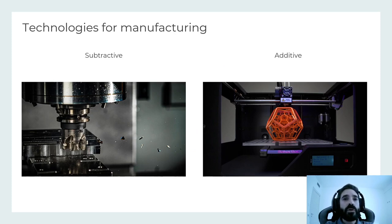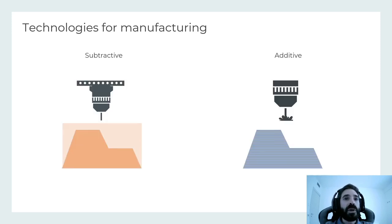The most common technologies for digital fabrication can be divided into two categories: additive manufacturing like widespread 3D printing technology, and subtractive manufacturing like CNC machining. Subtractive manufacturing cuts material from a solid block, while 3D printing constructs objects by adding material layer by layer.